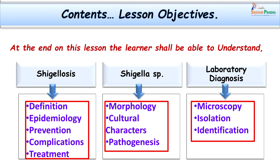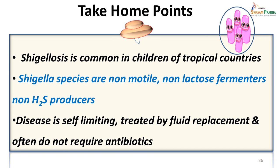By learning about the disease, the organism, and its lab diagnosis, we have achieved the lesson objectives. Take-home points: Shigellosis is common in children, especially in tropical countries. Shigella dysenteriae causes the most severe disease. Key characteristics of the organism to remember: non-motile, gram-negative bacilli, non-H2S producing, and non-lactose fermenters. The disease is self-limiting and fluid replacement helps in most cases; however, if toxemia or complications are suspected, treatment with specific antibiotics is necessary.